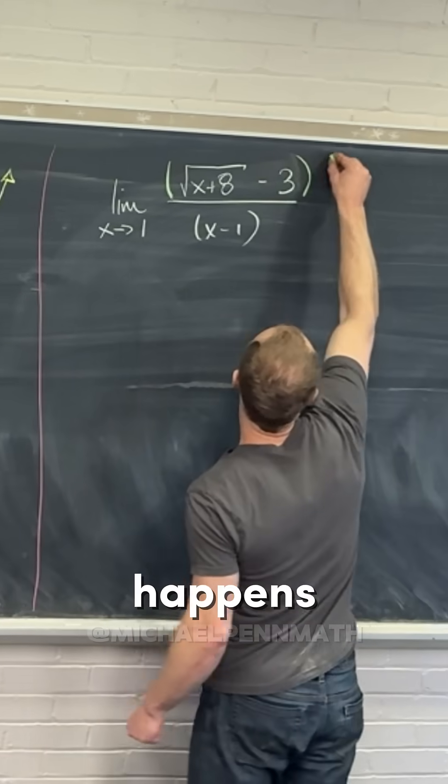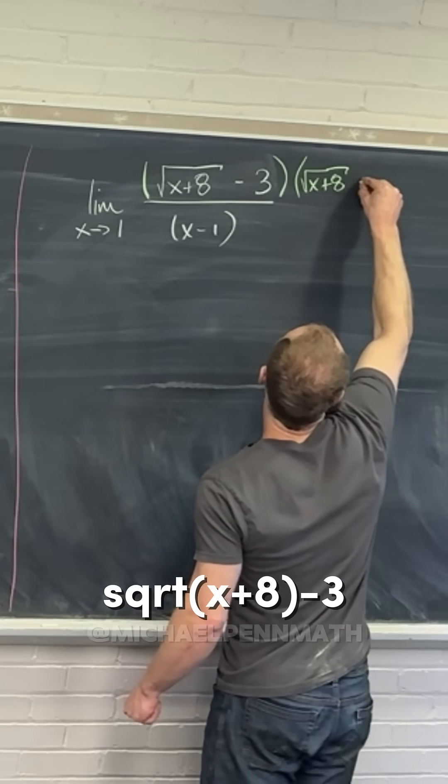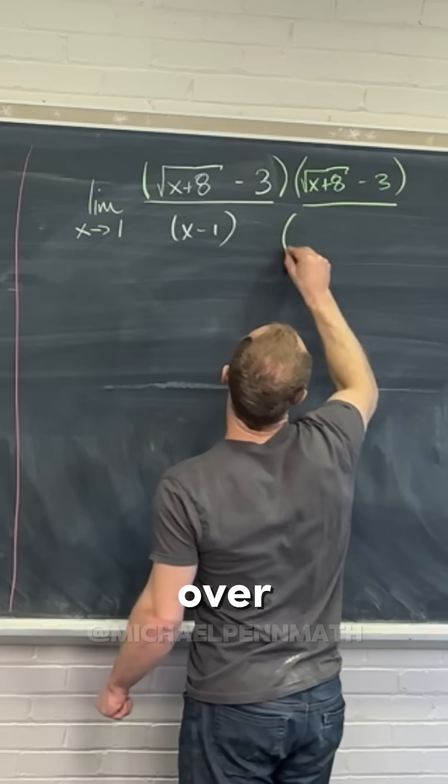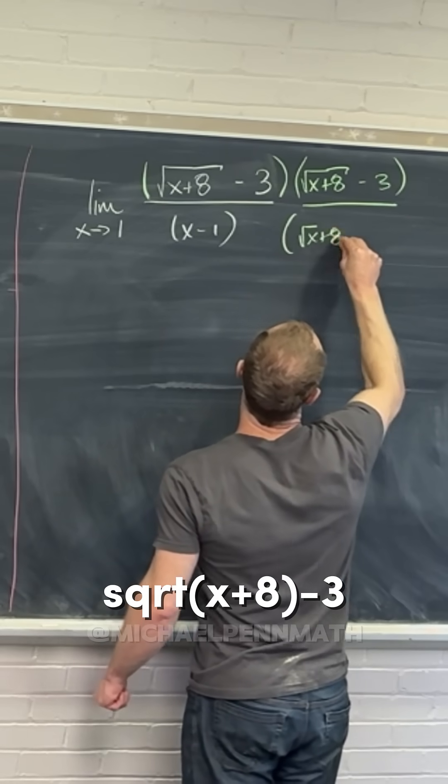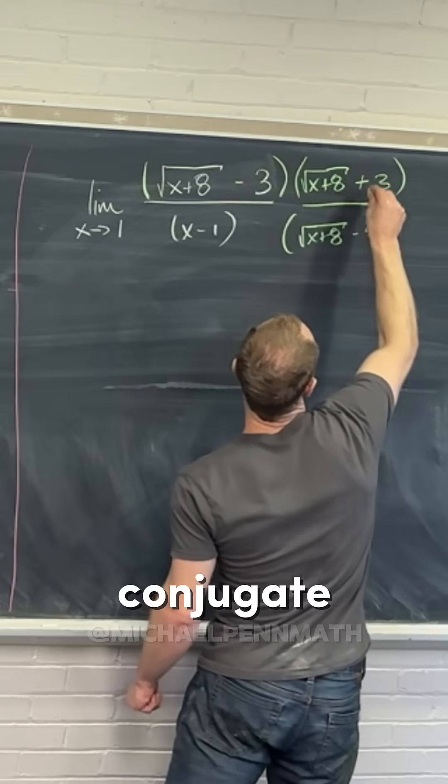Let's see what happens here. We're going to multiply by the square root of x plus 8 plus 3 over the square root of x plus 8 plus 3, the radical conjugate.